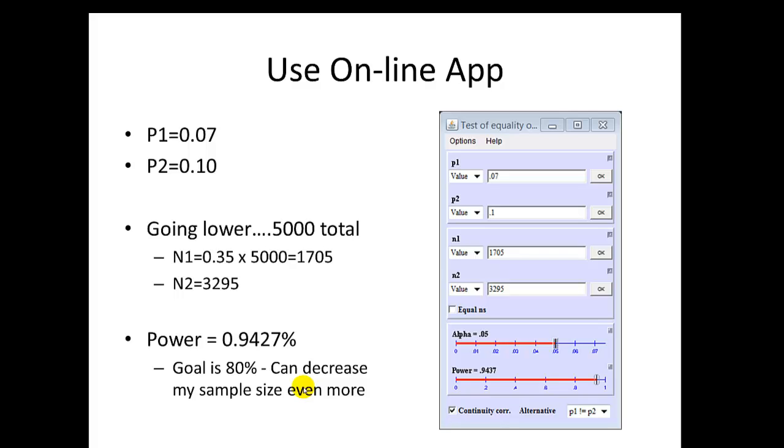So, let's go lower. Let's try 5,000. 0.07 and 0.1 stay in P1 and P2. This time, I take 5,000 times 0.35 and I get 1,750 for N1. And the difference is 3,250. Type that in there. Now, we get a power of 0.9437. Again, remember, our goal is 80%, so this is still too high. We can still go smaller.